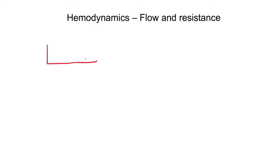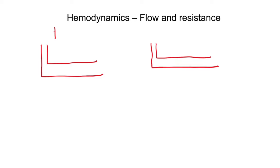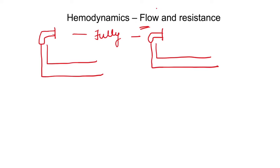Consider two tubes of different diameters — one larger, one smaller — both connected to taps. If we open both taps fully, in which tube will flow rate be more? Flow is not just the amount; it is the volume which flows per unit time. So time is also considered when we talk about flow. The flow rate will be more in the larger diameter tube.